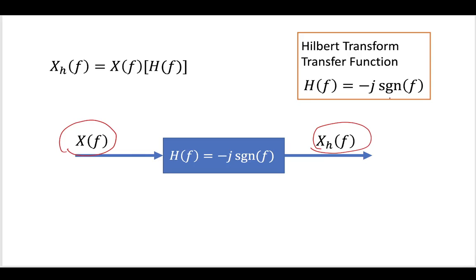Let's do some mathematical transforms to better understand the meaning of this transfer function. What is the meaning of this transfer function for both the magnitude and the phase of x(f)? We're going to have some phase as well. So what does this Hilbert transform do to the magnitude and phase of the signal x(f) that goes into the Hilbert transformer?